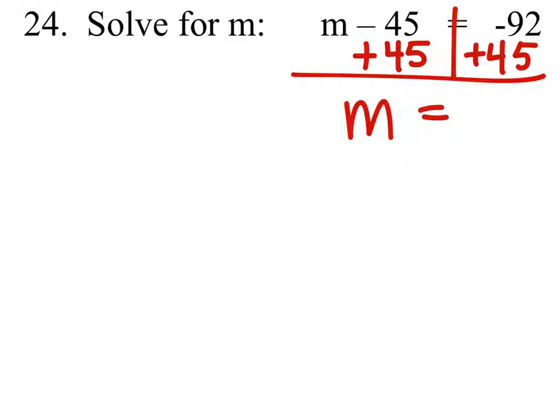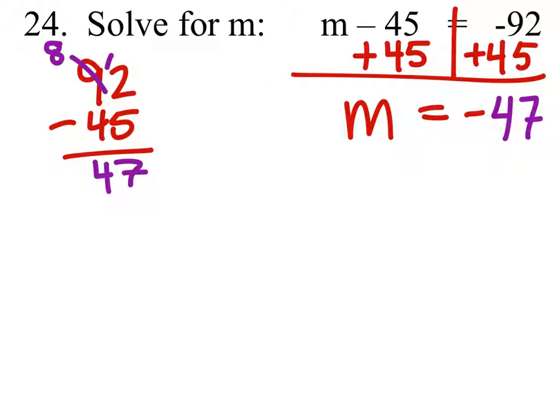Now we know there's more negatives here, so we know the answer is negative. So we can just take 92 and subtract 45. We'll need to borrow one from the 9 to make it 12. 12 minus 5 is 7, 8 minus 4 is 4. And our answer is negative 47.